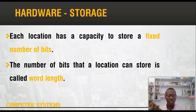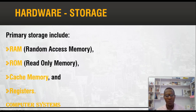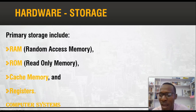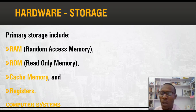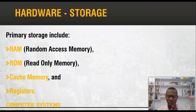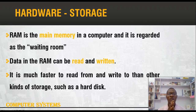Each location has the capacity to store a fixed number of bits, which is 8 bits, and this number of bits is what we call the word length of a memory. Primary storage comes in different types: number one is RAM, known as Random Access Memory; number two is ROM, which stands for Read Only Memory; then we have cache memory and registers. For this video we'll be looking at RAM and ROM.